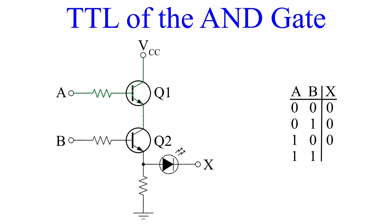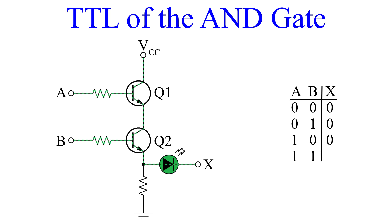Last, we apply a voltage to both A and B. Q1 is turned on and current flows to Q2. Q2 is also active, since it has a base bias voltage from input B. This allows current to flow to the output, turning our indicator LED on.